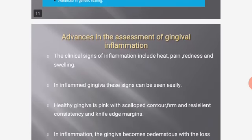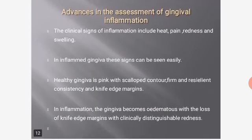Regarding advances in the assessment of gingival inflammation: the clinical signs of inflammation include heat, pain, redness, and swelling in the inflamed gingiva. Healthy gingiva is pink with a scalloped contour, firm and resilient consistency, and knife-edge margins. In inflammation, the gingiva becomes edematous with loss of knife-edge margins and clinically distinguishable redness.